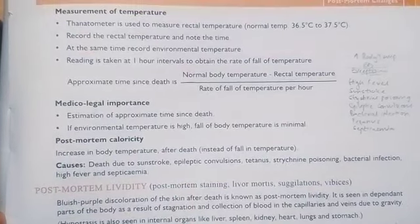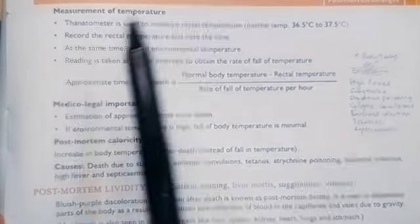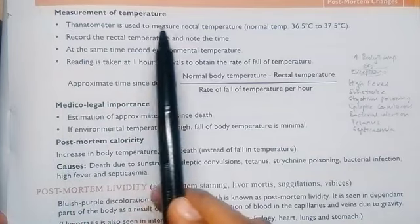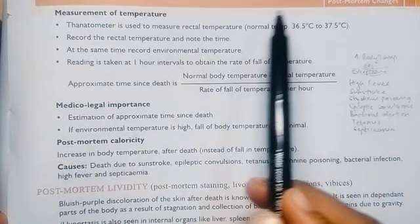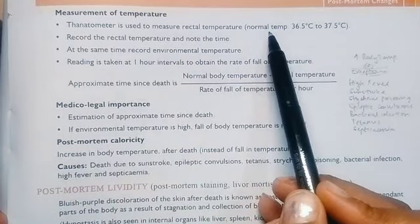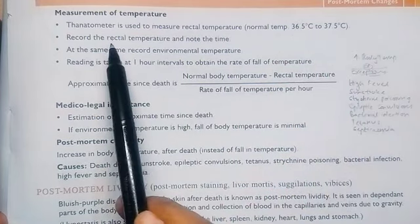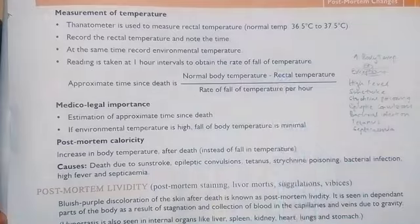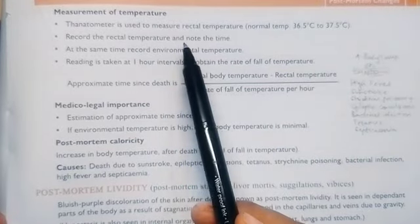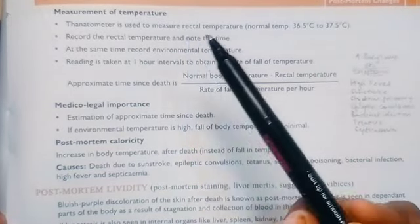Measurement of temperature: we use a thanatometer. Thanatometer is used to measure rectal temperature. The normal rectal temperature is 36.5 degrees Celsius. Record the rectal temperature and note the time.